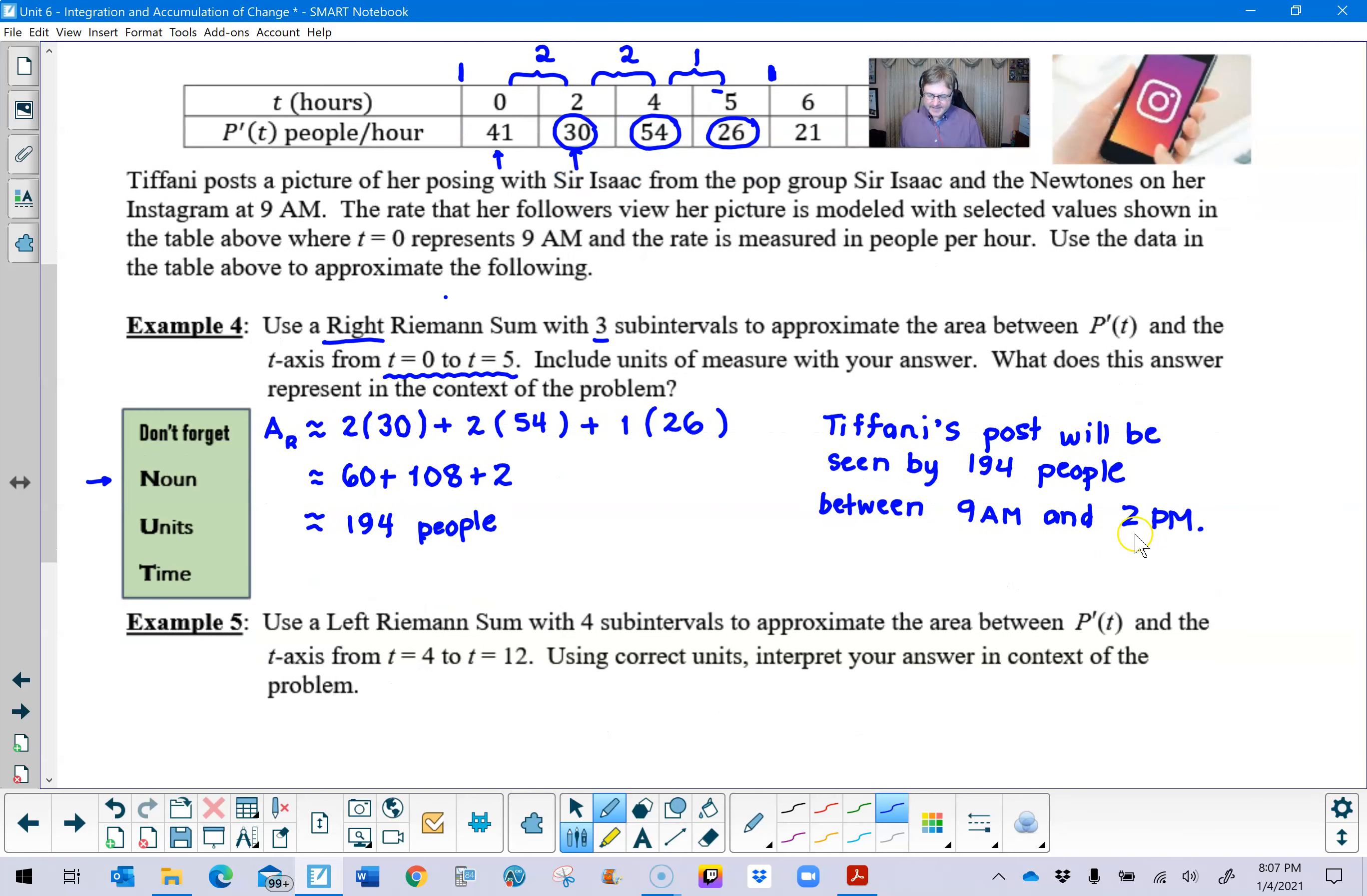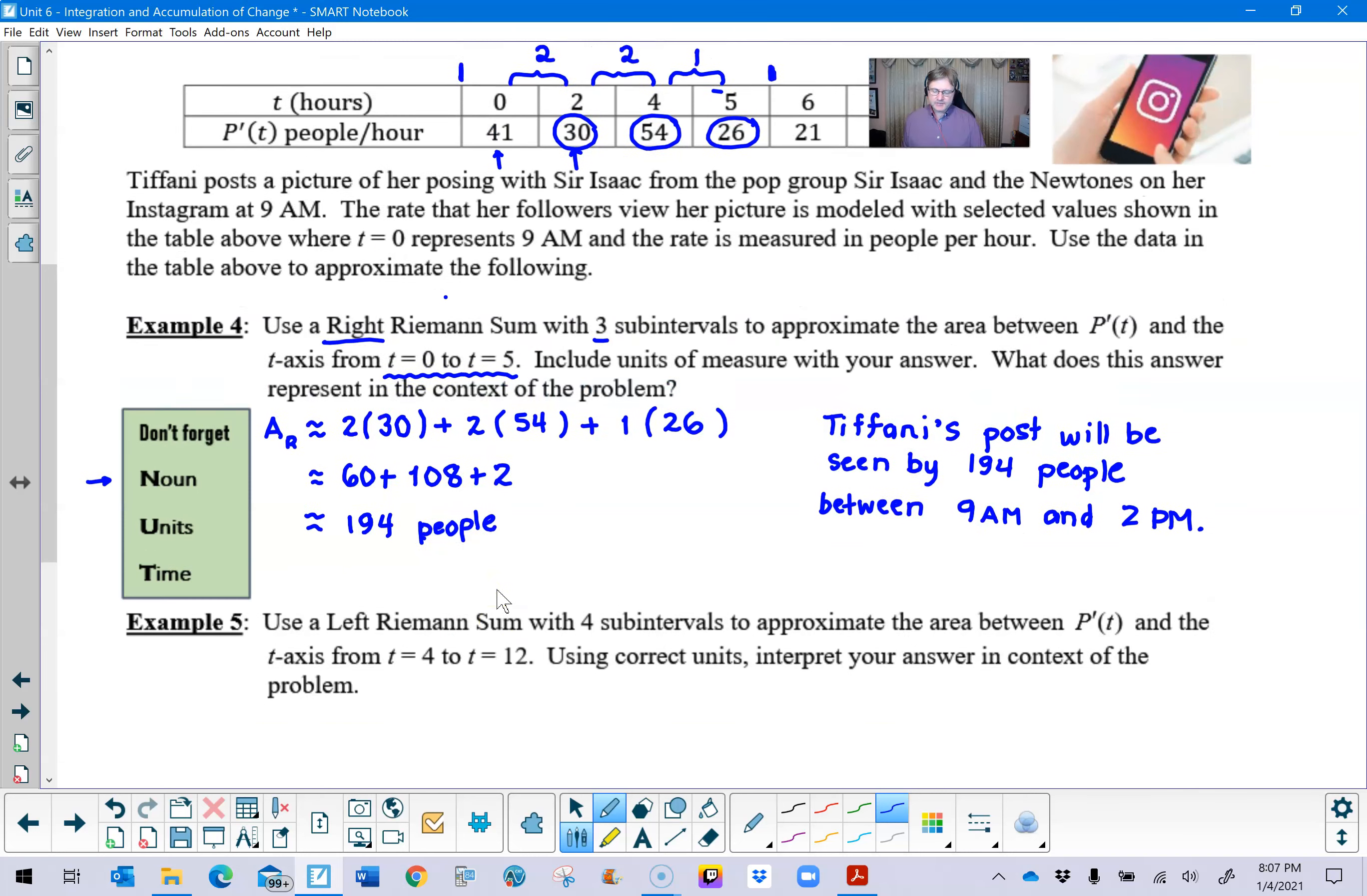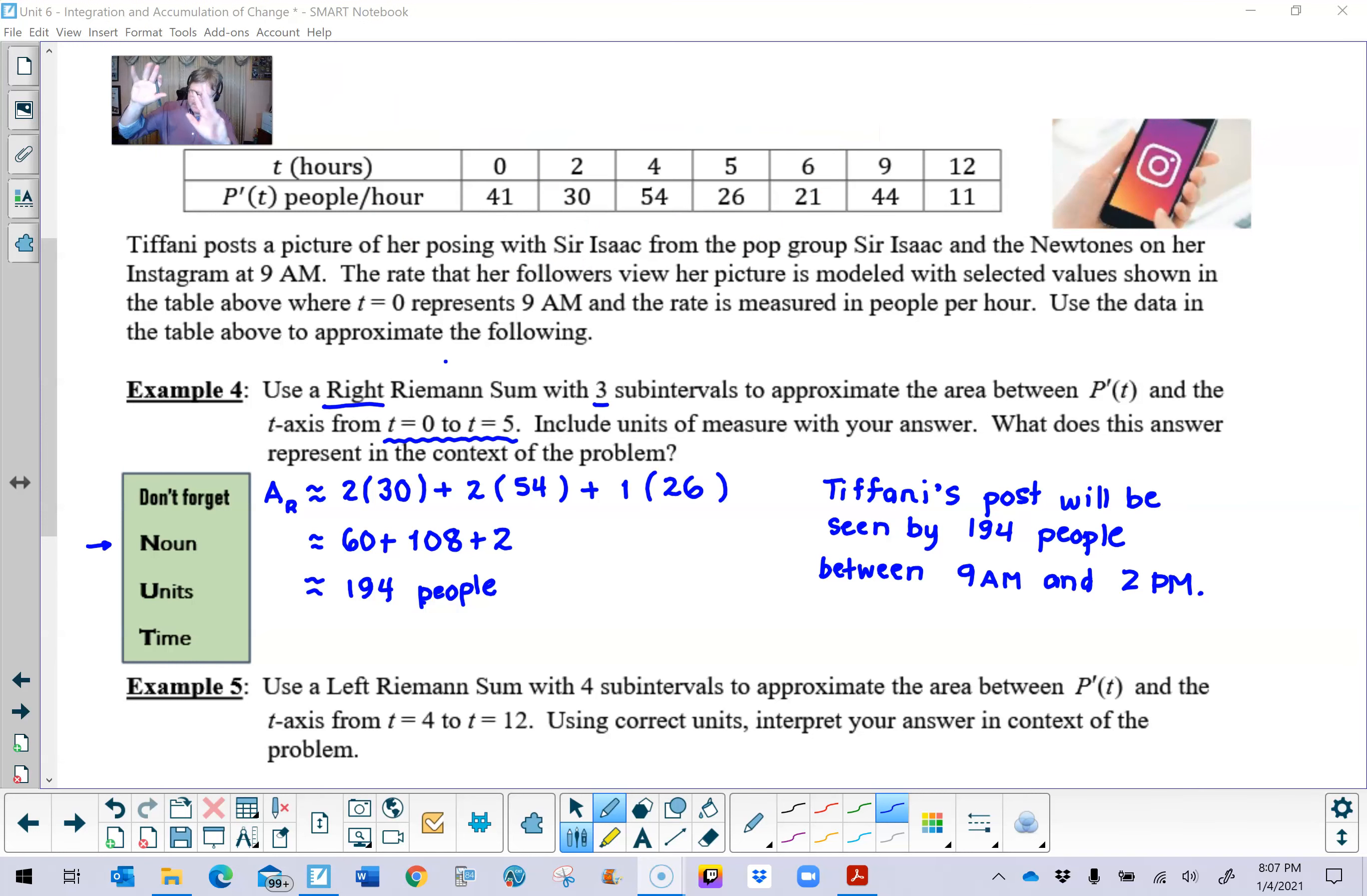Now you're going to find out that example 5 reads very similarly. It says now use a left Riemann sum with four subintervals to approximate the area between p prime of t and the t-axis but now we're going to do so between t equal 4 and 12. And again we want to use correct units and interpret the answer in the context. So I think it would be best if I clear the board here and because I'm going to be working from 4 to 12 let's move my camera over to here.